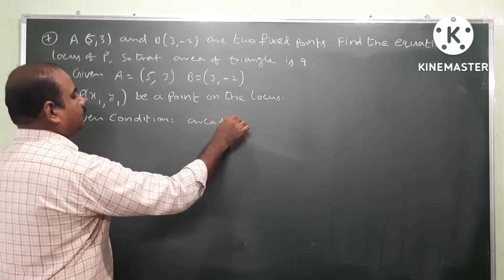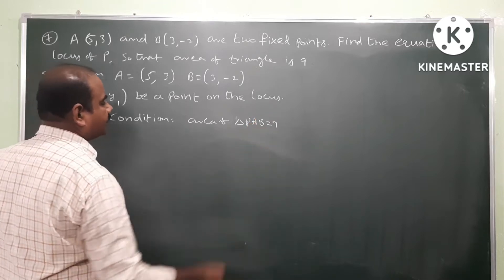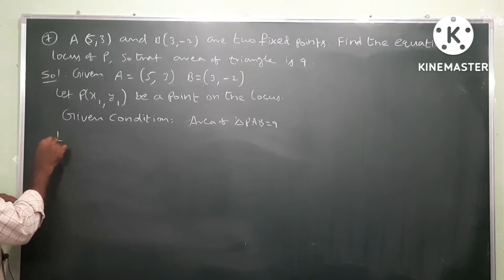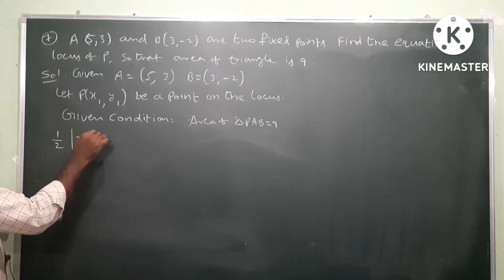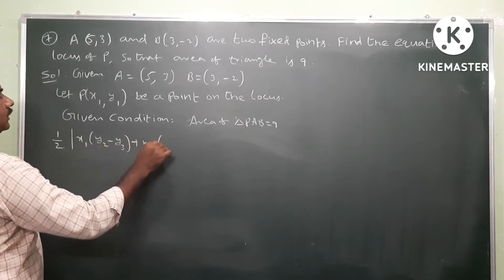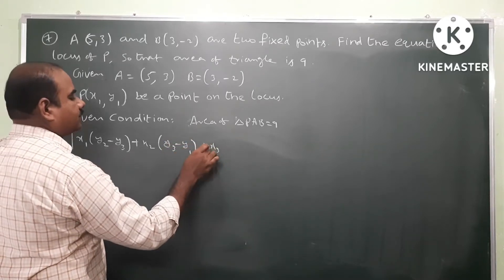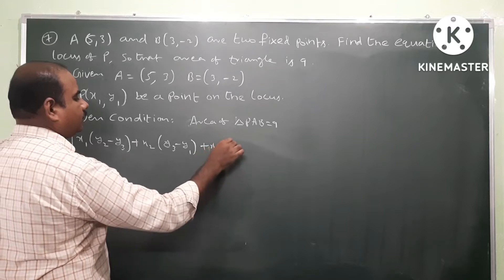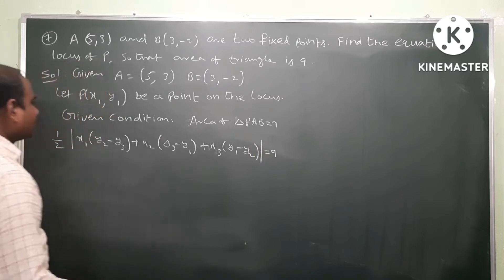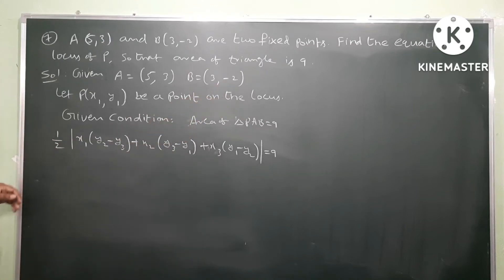Area of triangle PAB is nine. Using the area of triangle formula: half times mod of x1(y2 - y3) plus x2(y3 - y1) plus x3(y1 - y2) equals nine. Here P is (x1, y1), A is (x2, y2), and B is (x3, y3). Now substitute the known values.